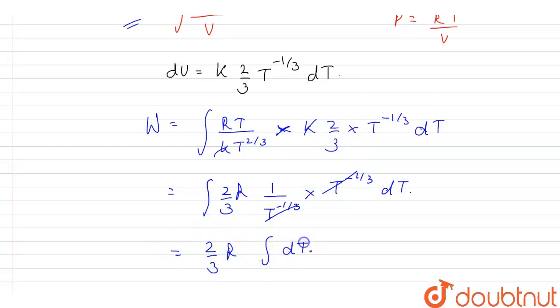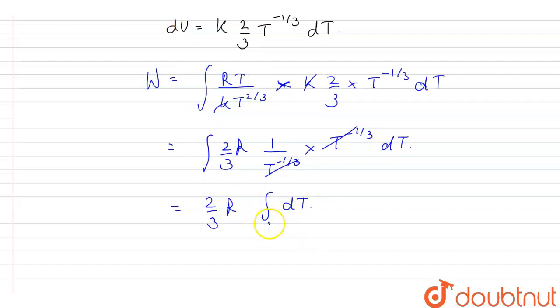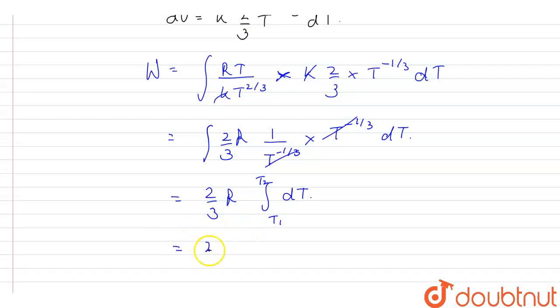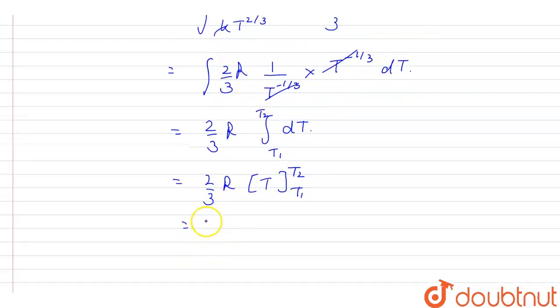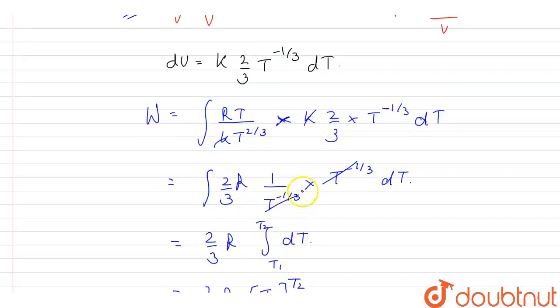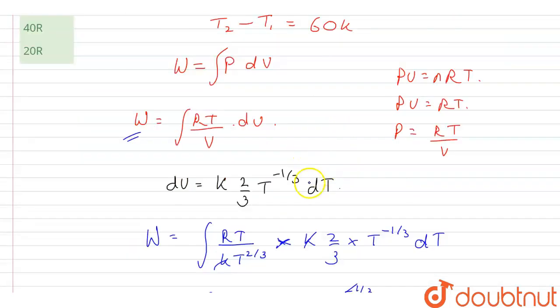This will be from limits T1 to T2. So this will be equal to (2/3)R [T]_{T1}^{T2}, which is (2/3)R(T2 - T1), and T2 - T1 is 60 Kelvin.